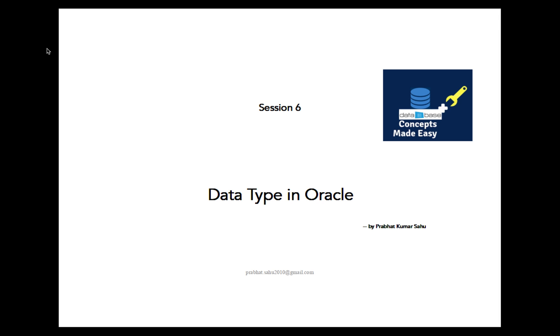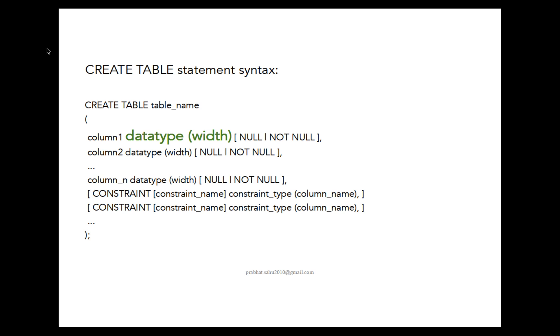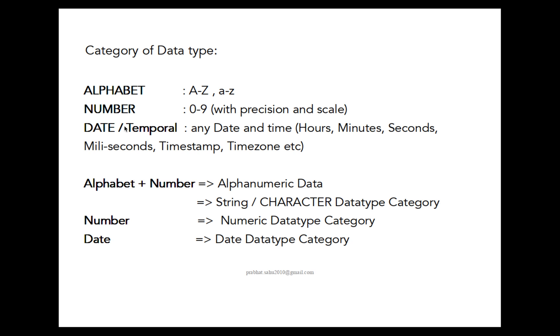This is a slide I have taken from my previous session, session 5, showing the CREATE TABLE syntax. Here you can see data type and width which comes after the column name. Today we are going to discuss about this data type. A column can have two properties: data type and its size. Data type means what type of information that column is going to keep, and size is the amount of space it is going to occupy.